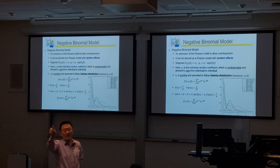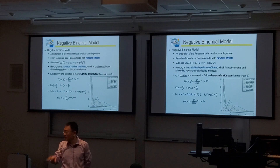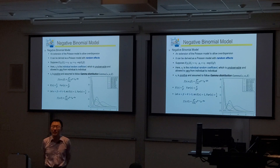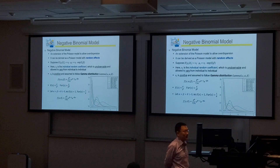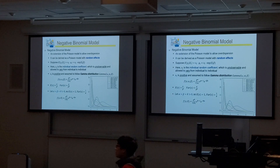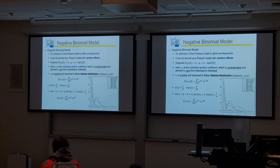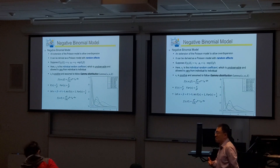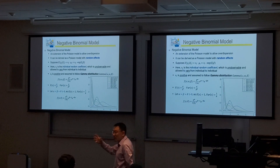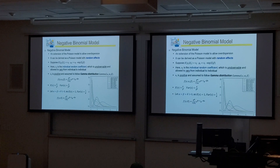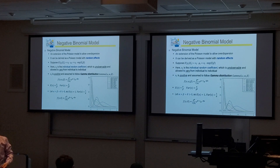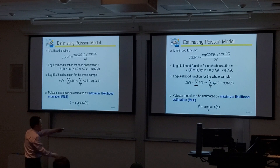If I want to test you on that formula, I will give you the formula. But you should have an idea of what the Poisson model is about and how we model those counts for the dependent variable. The Poisson distribution — we modeled the probability of the y variable taking those integer values according to that Poisson distribution.